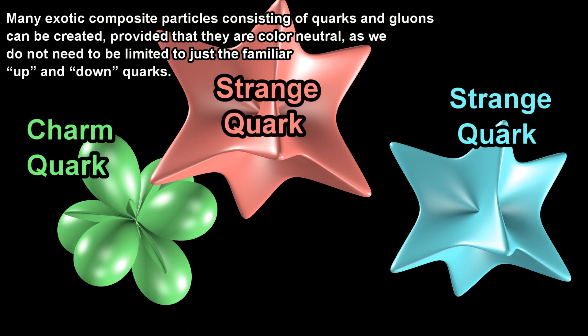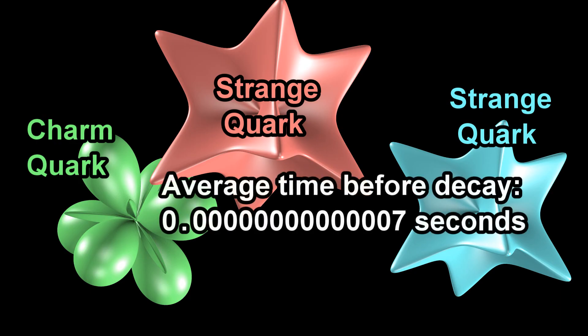Many exotic composite particles consisting of quarks and gluons can be created, provided that they are color neutral, as we do not need to be limited to just the familiar up and down quarks. Though, these exotic particles are not very stable.